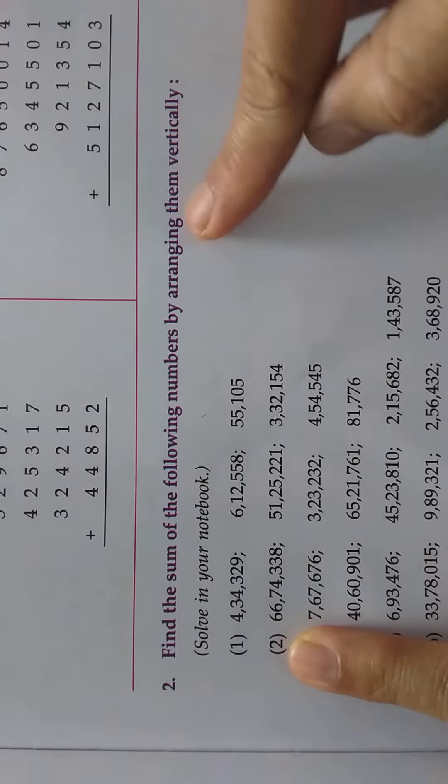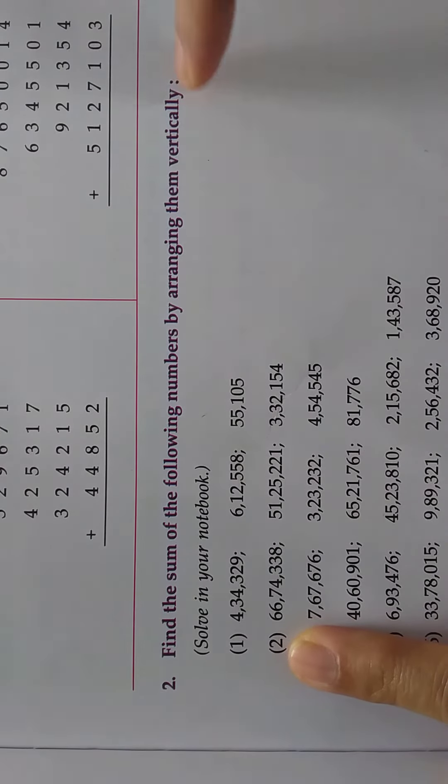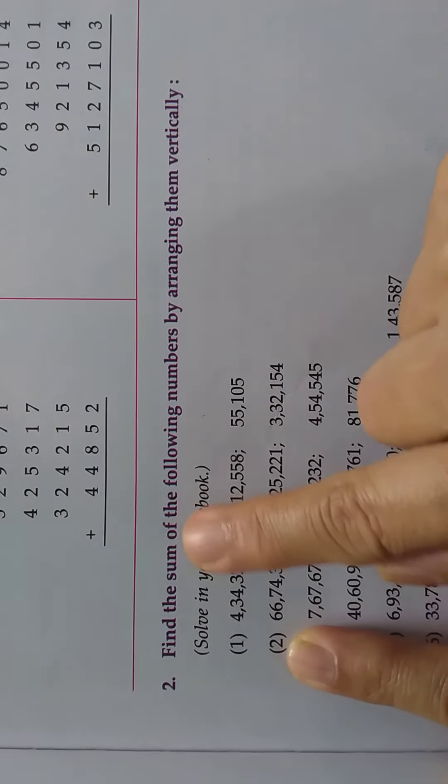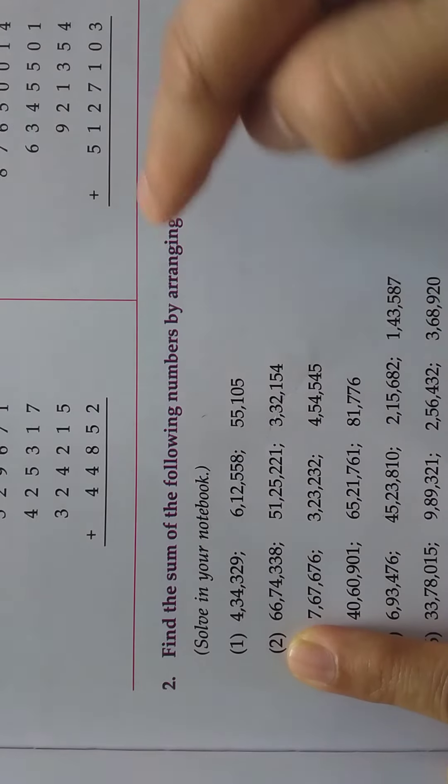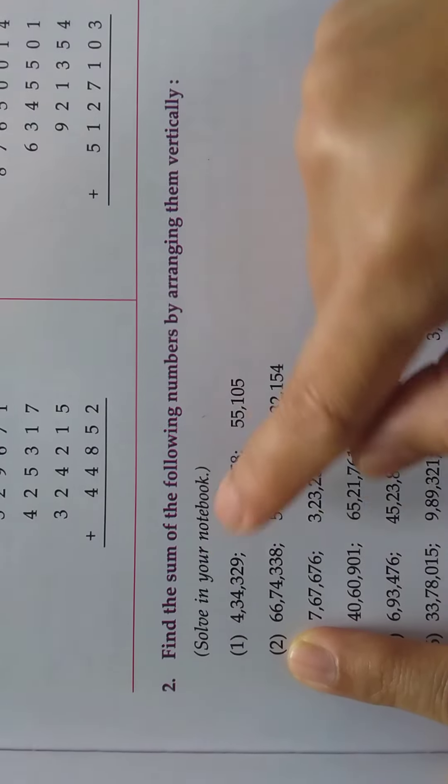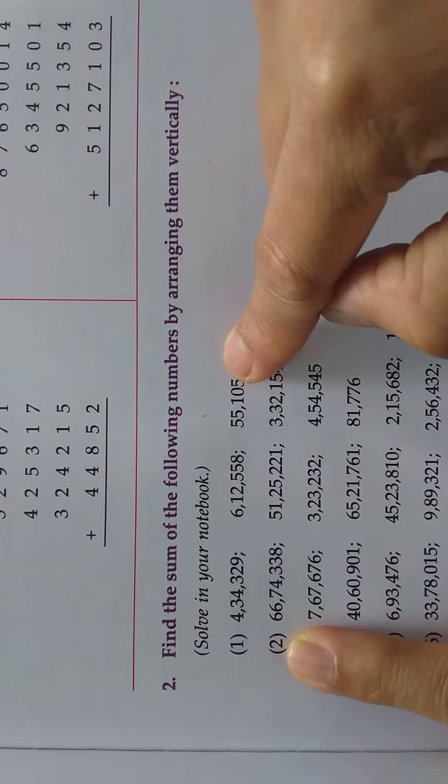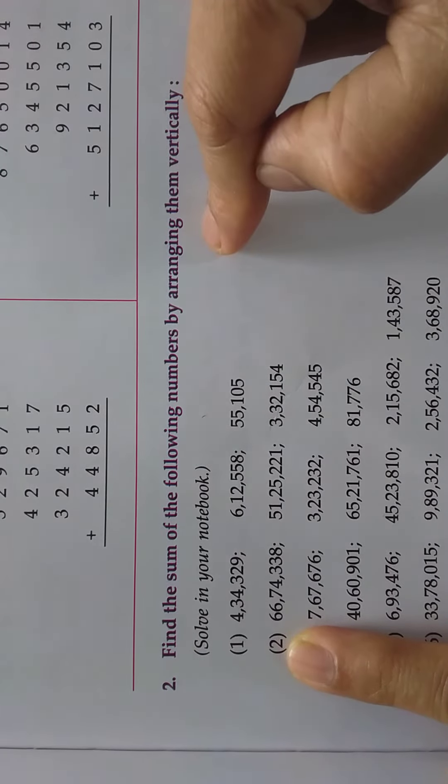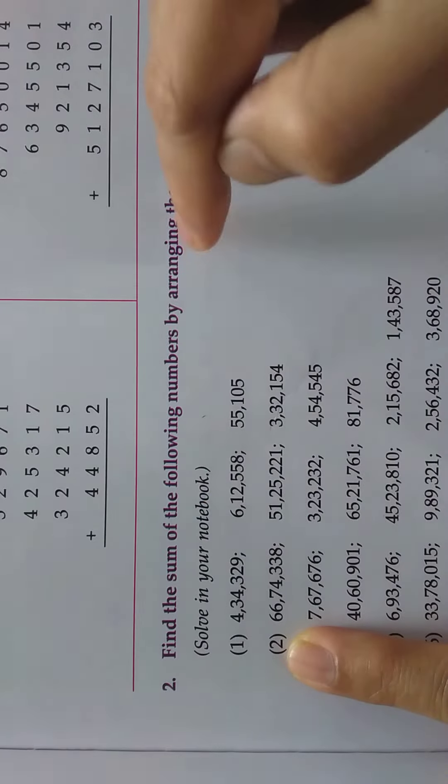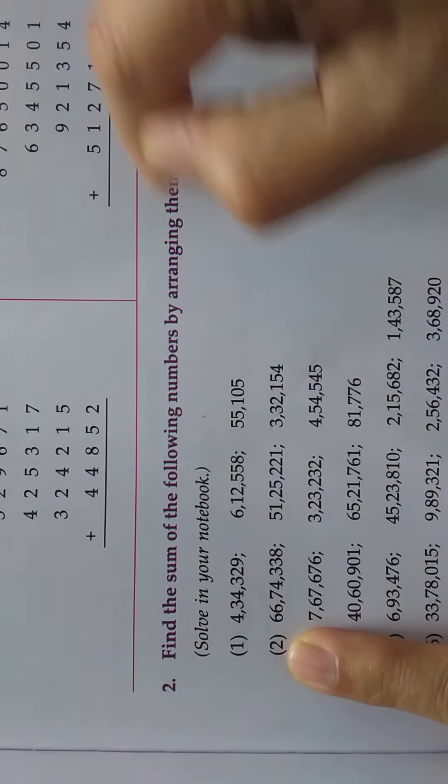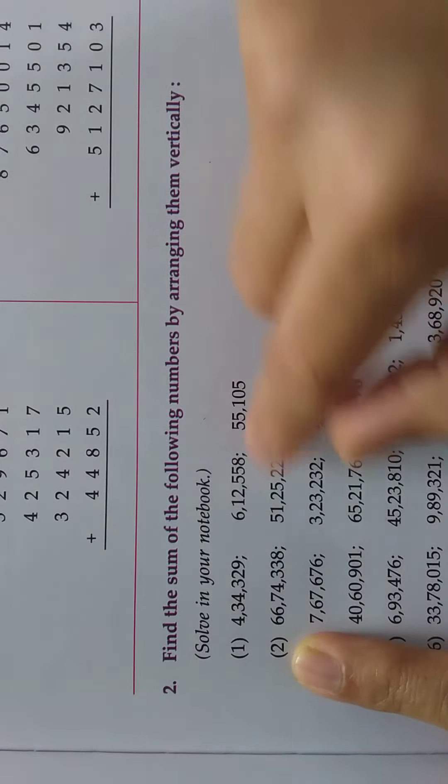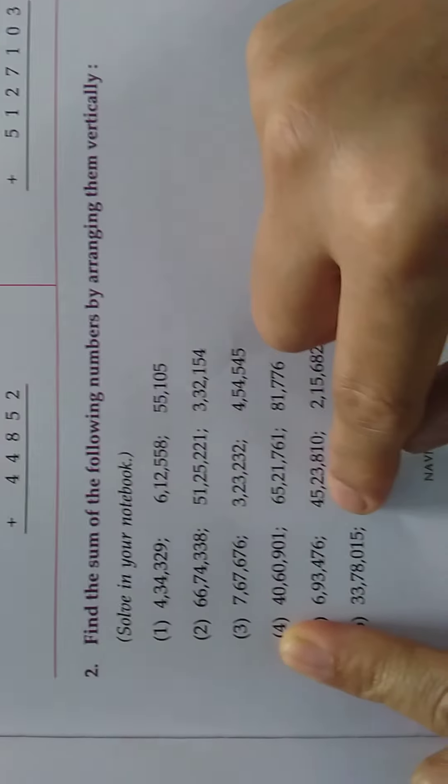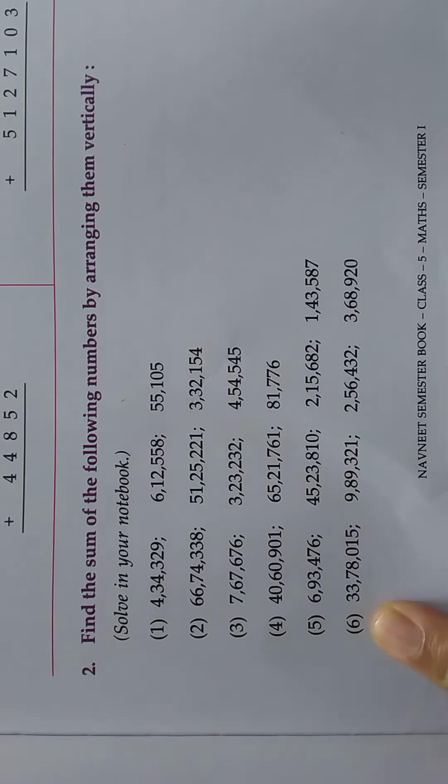Find the sum of the following numbers by arranging them vertically. Sum I told, you should write all these numbers and add them, then you will get the sum. Each and every sum you do it in your notebook. Thank you.